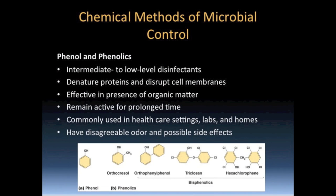Phenol, also known as carbolic acid, was first employed as a disinfectant and antiseptic by Joseph Lister in 1867. Phenol is a toxic chemical that has an offensive odor. Phenolics are compounds that are chemically related to phenol that are generally less toxic, demonstrate a higher level of antimicrobial action than phenol, and have less offensive odors. There are literally hundreds of phenolics available. Natural oils such as clove oil and pine oil are also phenolics that may be utilized as antiseptics.